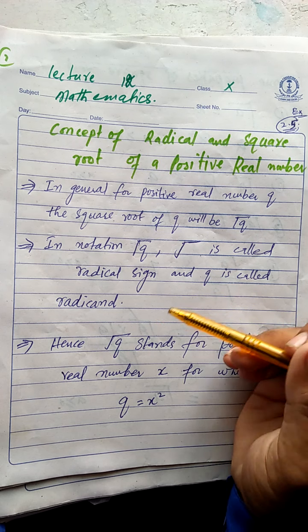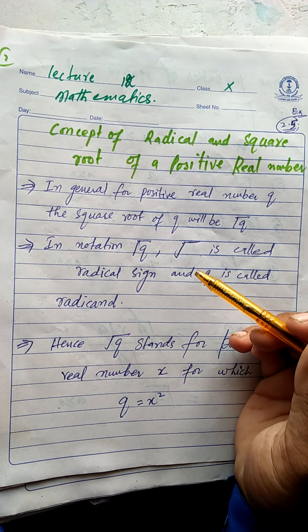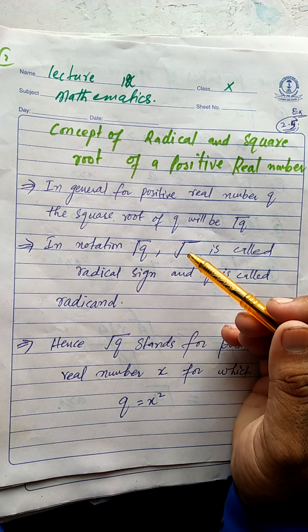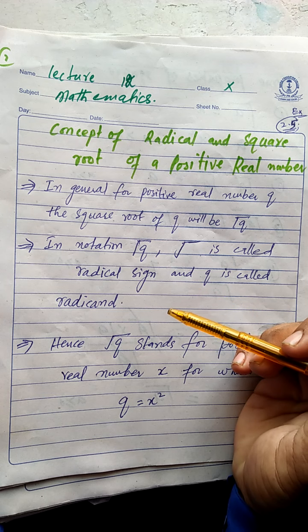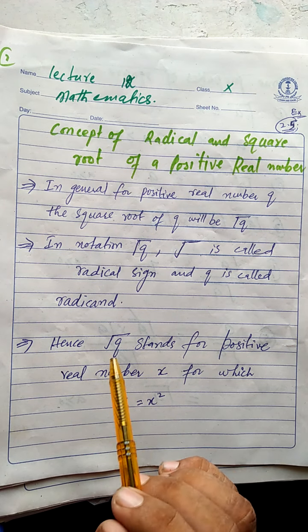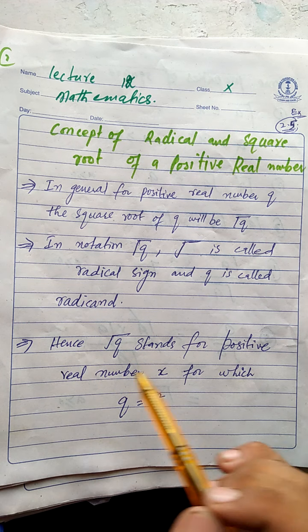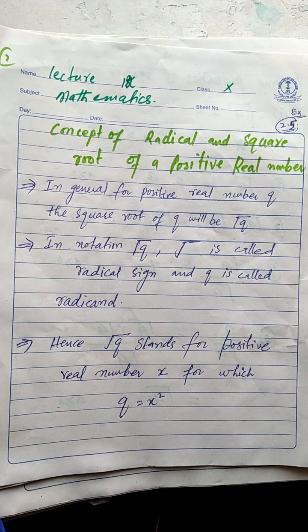The radical sign represents the square root of q for a positive real number. We call this symbol the radical sign, and under root q or radical q stands for the square root. So radical q stands for a positive real number x, and the radical sign always yields a positive real number.